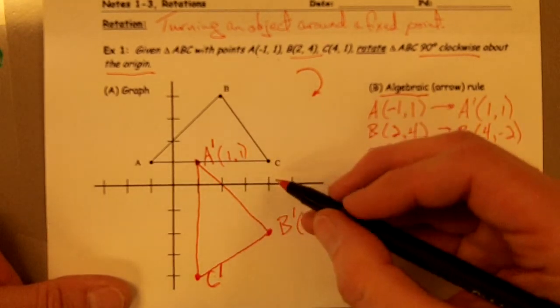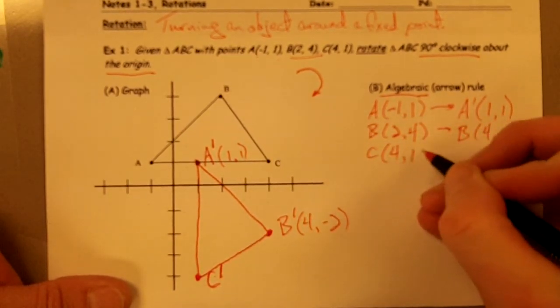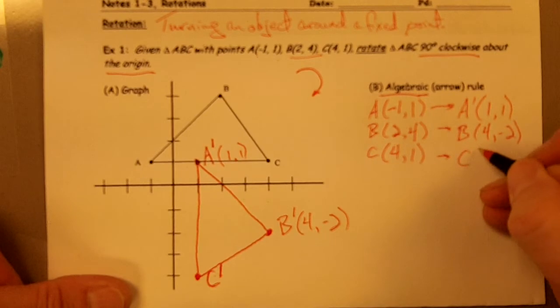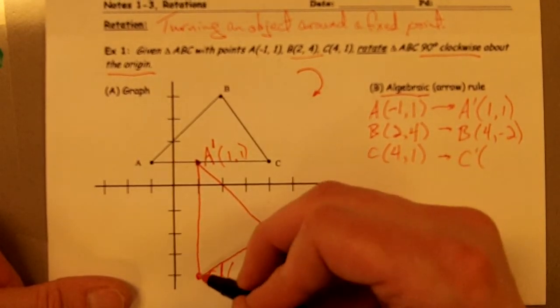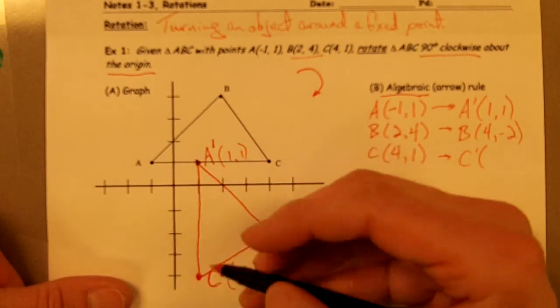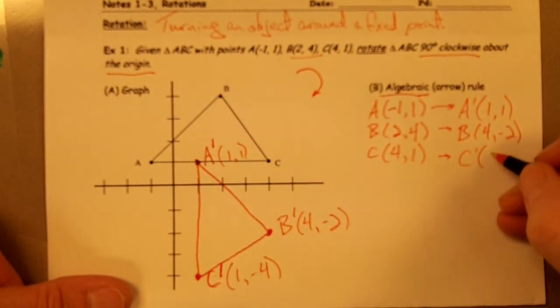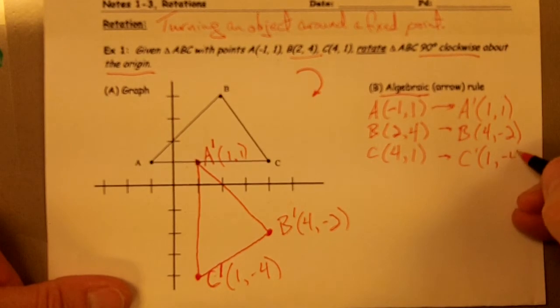And C, which is at 4 comma 1, that gets rotated over to C prime, which is at 1, negative 4.